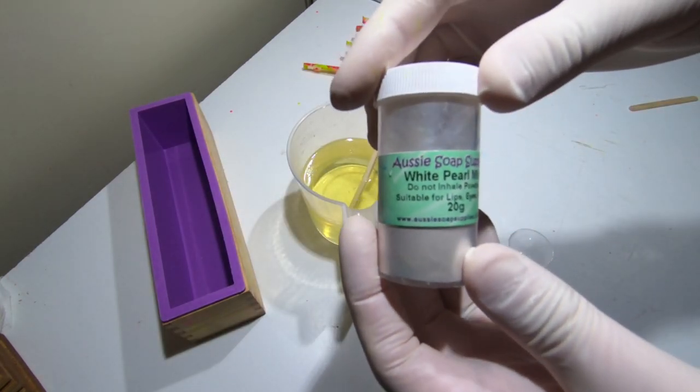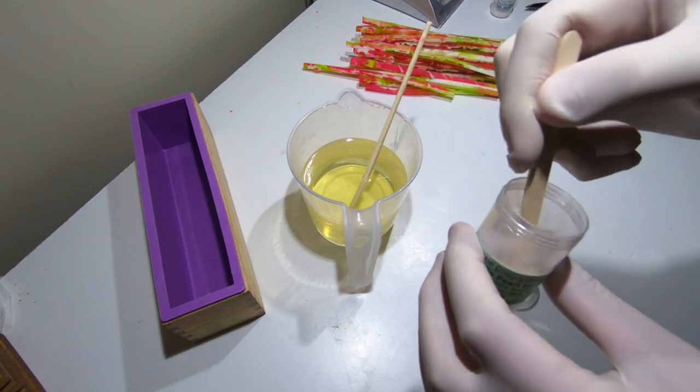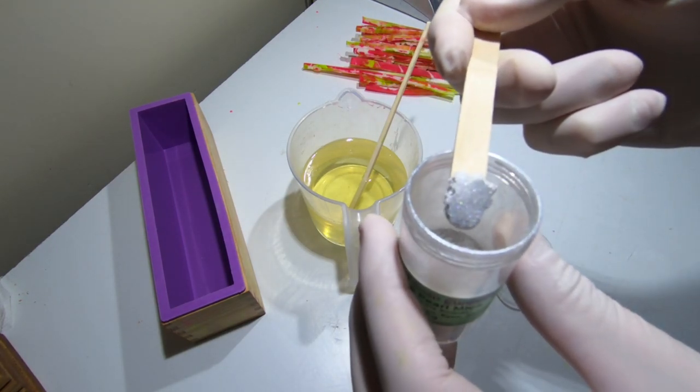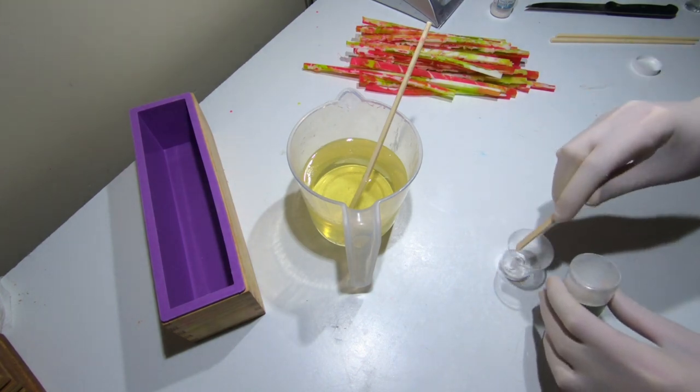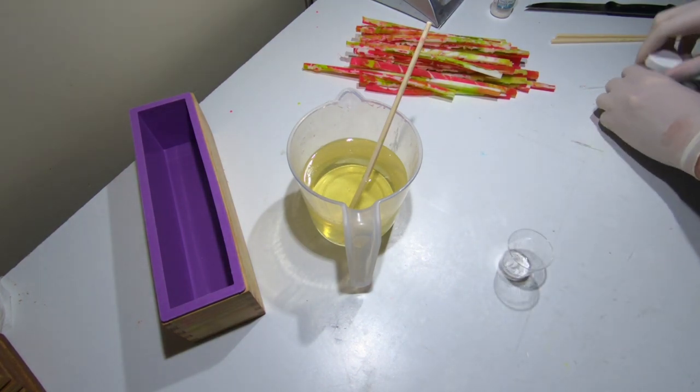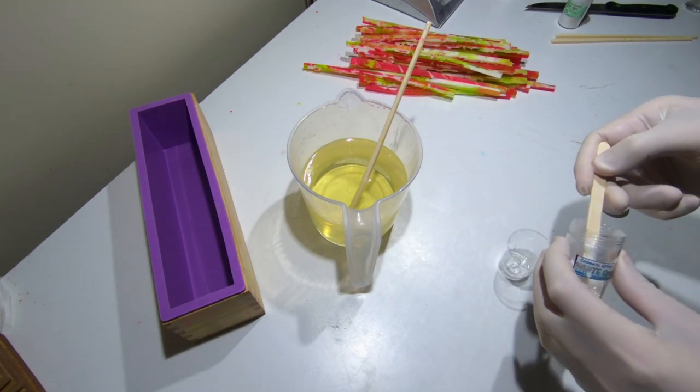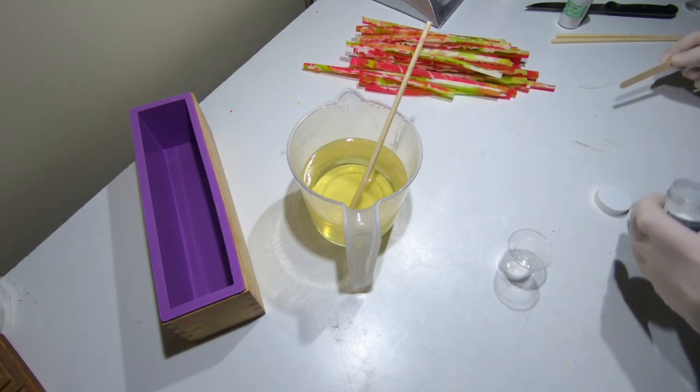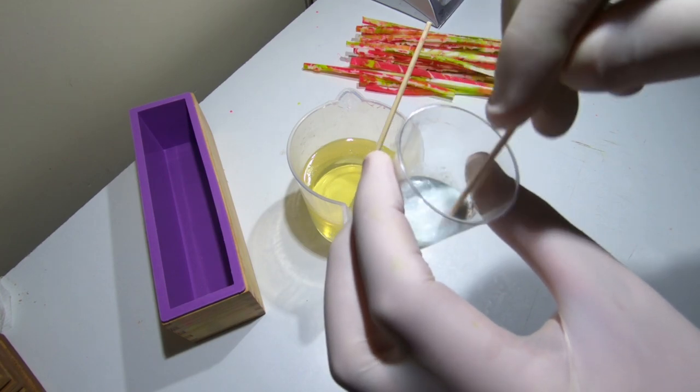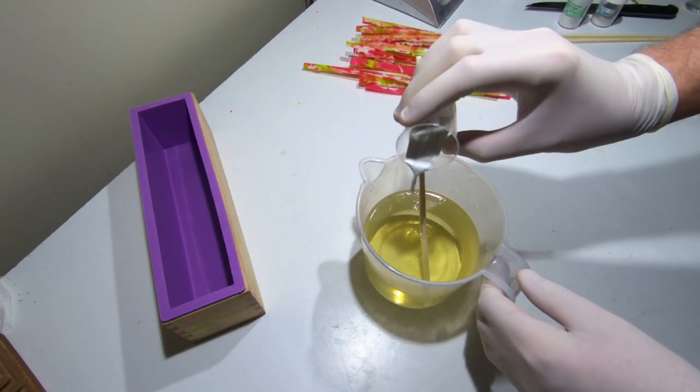This is the white pearl mica, just a white shimmery type pearl. On top of that, I'm also going to add the sparkling glitter. Wow, that looks pretty good. So we're going to add this whole thing. Whoa.